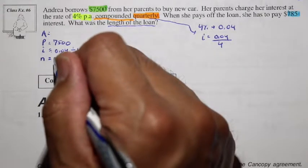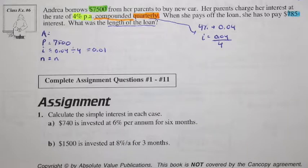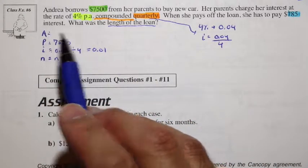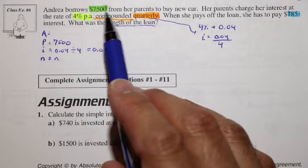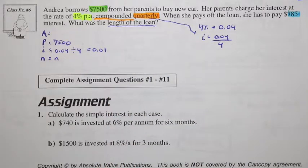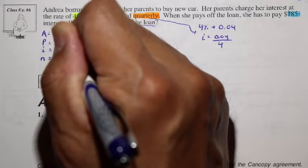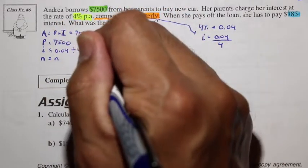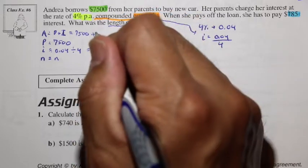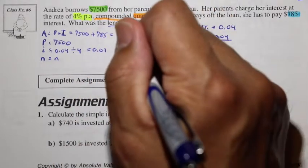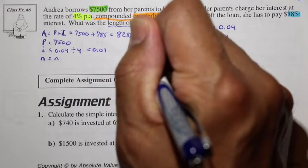And N is just N. We don't know what it is yet. But how can we find A? Well, the total amount A is going to be the original principal plus the interest that you had to pay. So this is P plus the total interest. So that's equal to your 7,500 plus your 785, which when you add that together is going to be 8,285.